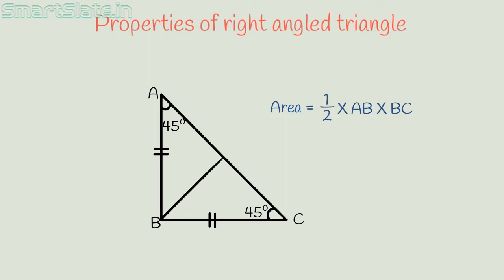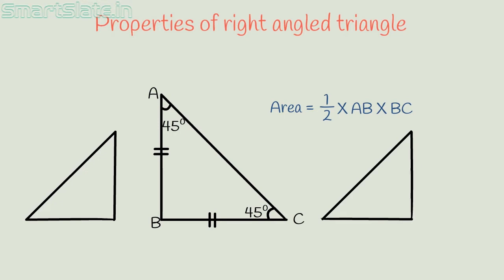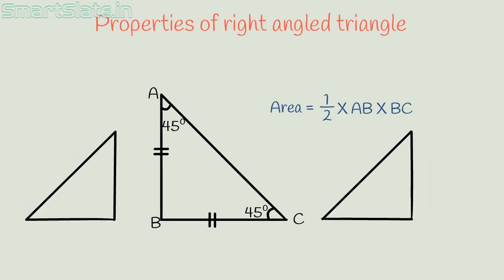The perpendicular drawn from the right-angled vertex to the hypotenuse divides the triangle into two similar triangles which are similar to the given right-angled triangle. These are some of the properties of right-angled triangles.